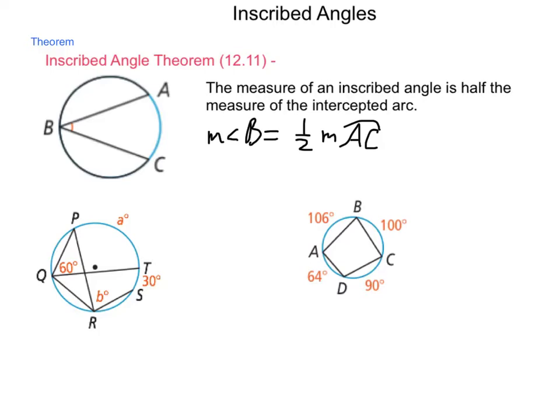So, let's use that in the diagrams below to find the missing values. For instance, in this circle on the left, we have A and B that are both missing. Well, A is the measure of arc PT. And the measure of angle PQT is 60 degrees.